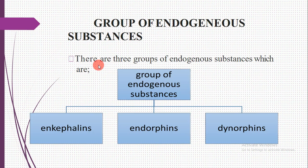These are the groups of endogenous substances produced in the human body. The first group is enkephalins, the second is endorphins, and the third is dynorphins.